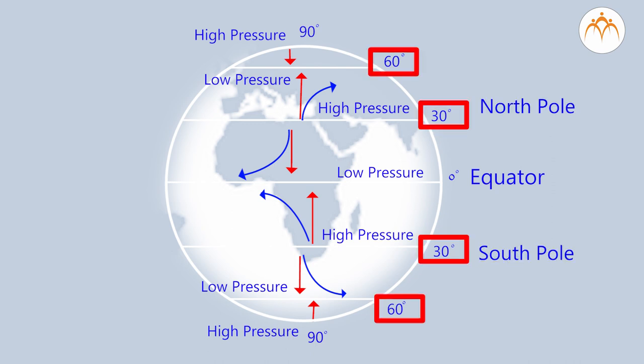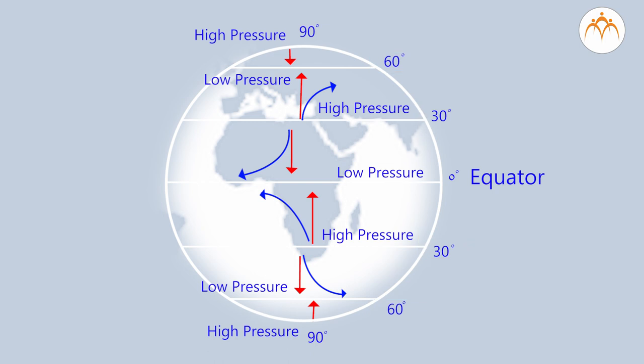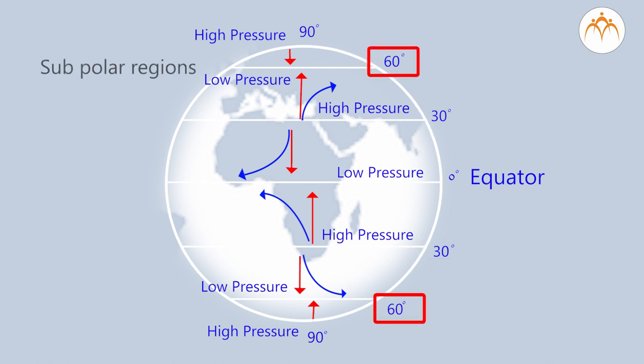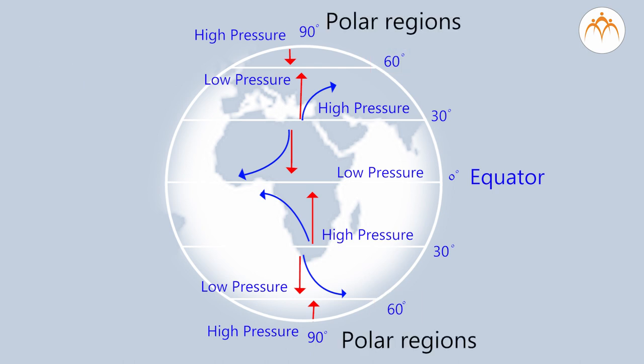When we cross 60 degrees, the pressures are low in both hemispheres. At 0 degrees we find the equator, at 30 degrees the temperate zones in both hemispheres, at 60 degrees the subpolar regions, and at the poles the polar regions are seen.